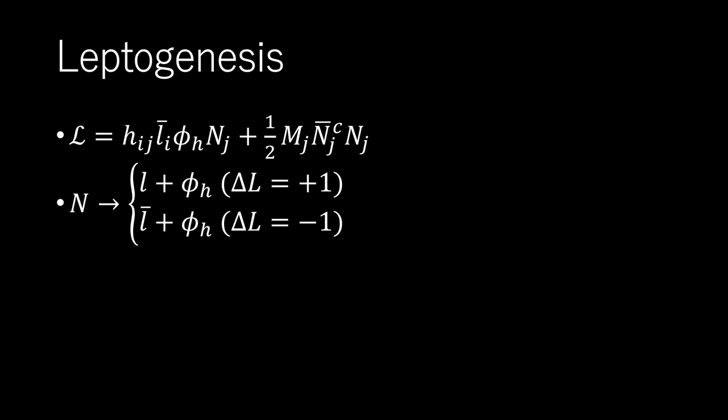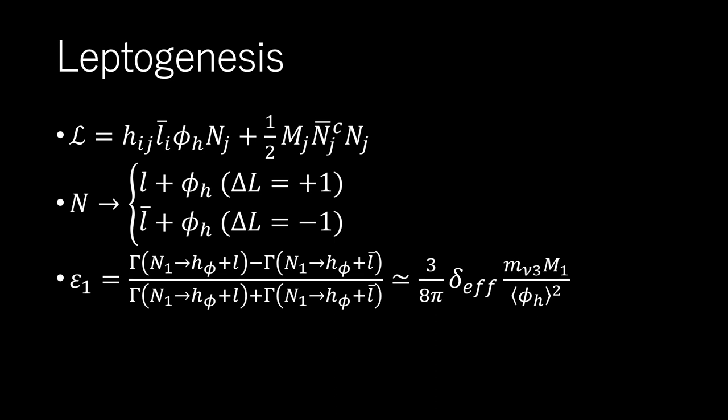CP violation results from the complex phase of the mass term. The asymmetry parameter of L decay and L bar decay due to CP violation, epsilon 1, is shown. Here, delta is the CP violation phase, Mnu3 is the mass of the third generation light neutrino, and M1 is the probability amplitude of the one-loop diagram of the heavy neutrino decay.